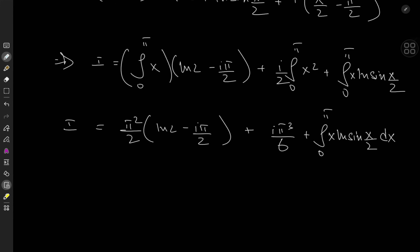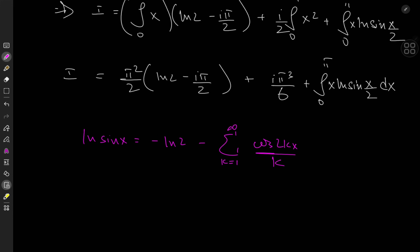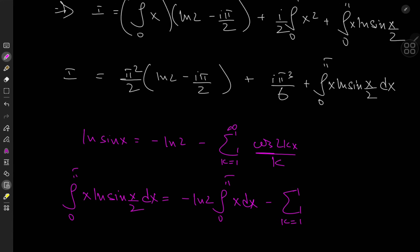To evaluate the integral involving log of sine, we need one of my all-time favorite series expansions: the logarithm of sin x equals negative log 2 minus the sum over k from 1 to infinity of cos(2kx)/k. Here x is replaced by x/2, so multiplying log sin(x/2) by x and integrating from 0 to π, we get: negative log 2 times the integral from 0 to π of x dx, minus the sum over k from 1 to infinity of (1/k) times the integral from 0 to π of x times cos(kx) dx.